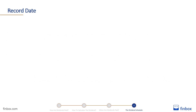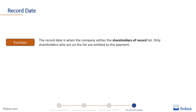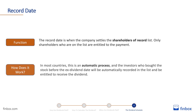The record date occurs right after the ex-dividend date. It is when the company settles the shareholders of record list. Only shareholders who are on the list are entitled to payment. In most countries, this is an automatic process, and the investors who bought the stock before the ex-dividend date will be recorded in the list and be entitled to receive the dividend.